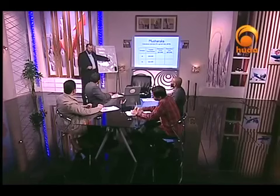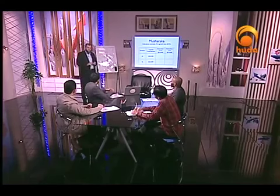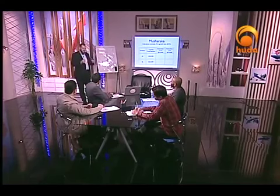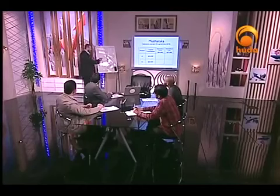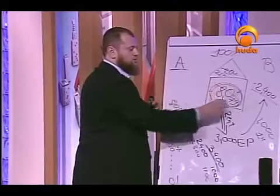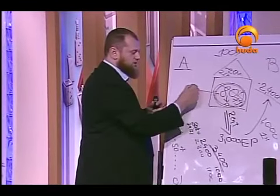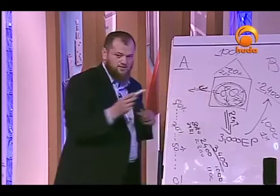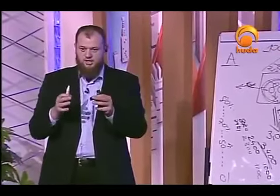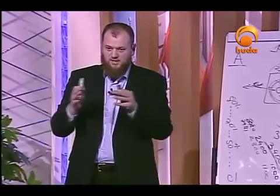How did the bank make money here? Through Musharaka — the partnership. How exactly did they make money? From the profit, from leasing — renting their portion to you. While they held equity, that equity was paid as rent. So from renting that house during that period, they made a profit.